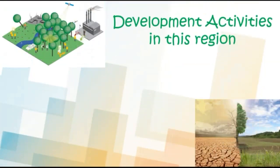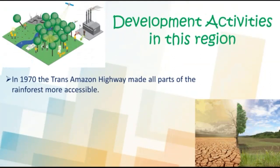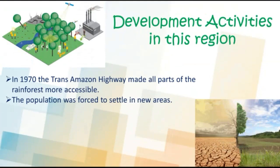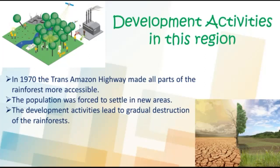The life of the people of the Amazon Basin is slowly changing. In older days, the forest could only be reached by navigating through the river. But in 1970, the Trans-Amazon Highway made all parts of the rainforest accessible. Aircrafts and helicopters are also used for reaching various places. The indigenous population was pushed out from the area and forced to settle in new areas, where they continue to practice their distinctive slash and burn way of farming.